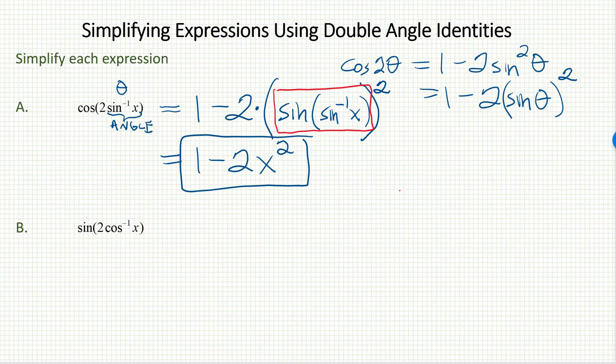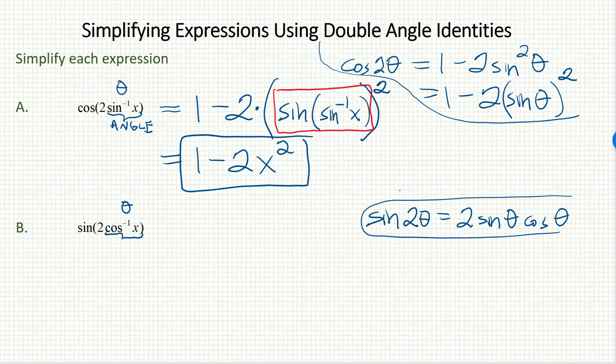It looks pretty similar. Everything's just reversed. Now, we have sine of a double angle. Again, this part here is just an angle. This will function as my theta in this problem. Well, I'm going to need to jot down the double angle identity for sine, then. We know that sine of 2 theta equals 2 times sine theta times cosine theta.